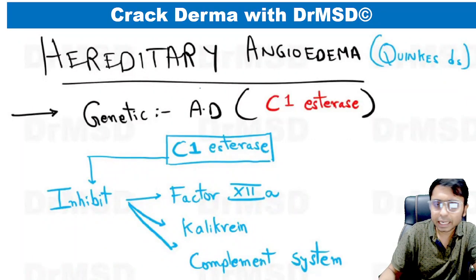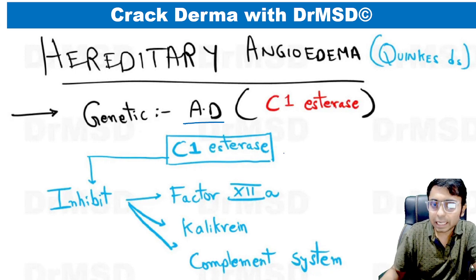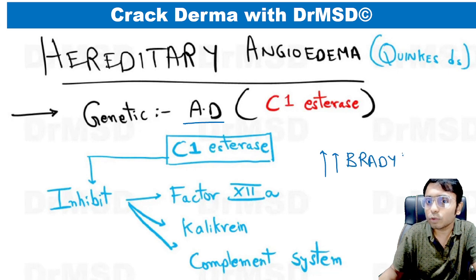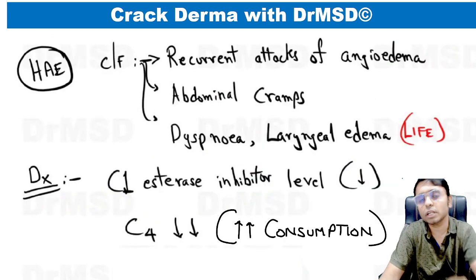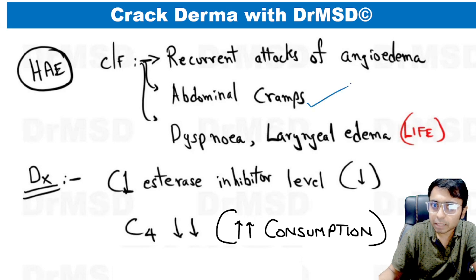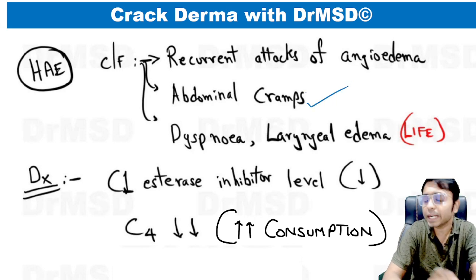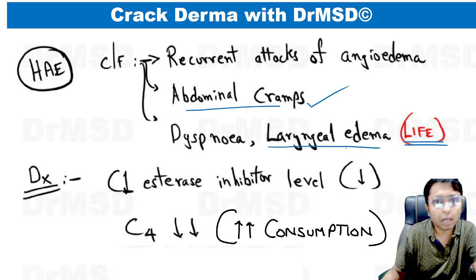In hereditary angioedema, which is autosomal dominantly inherited, there is C1 esterase inhibitor deficiency, because of which there are elevated levels of bradykinin. Due to various mechanisms, this bradykinin elevation leads to non-pitting type of cutaneous edema. Not only skin, but bowels can also get edema, causing abdominal cramps. And this condition can become life-threatening if there is edema of the larynx — making it a medical emergency in some cases.